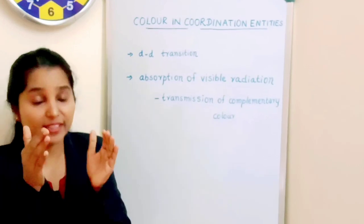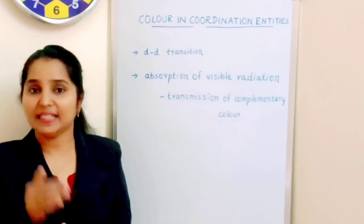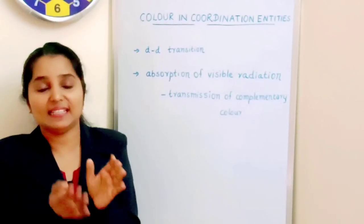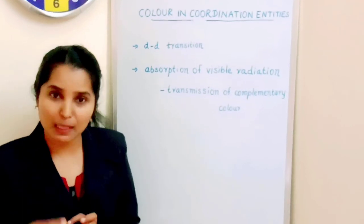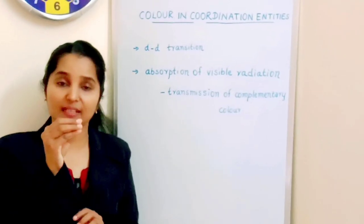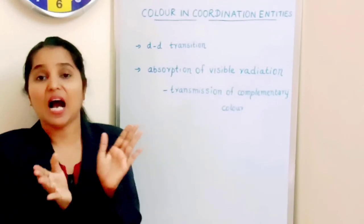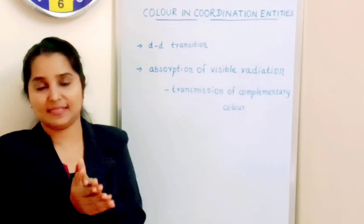This color in coordination compounds is due to d-d transition. The frequency of light that is absorbed by that particular electron that is jumping from the lower to the higher level is depending upon the amount of splitting, how large or how small the crystal field splitting is.